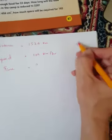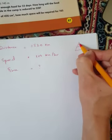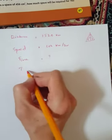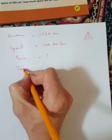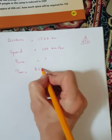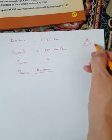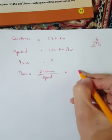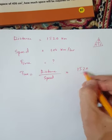According to our triangle formula, time equals distance divided by speed.